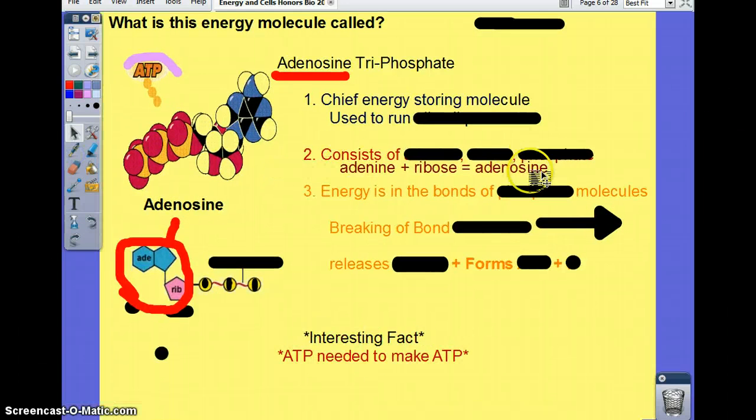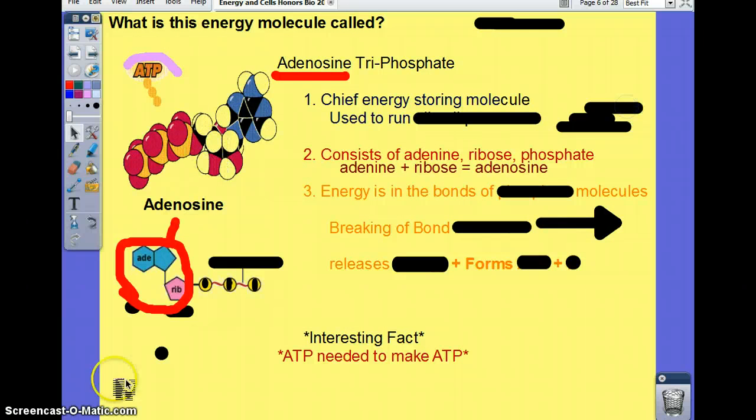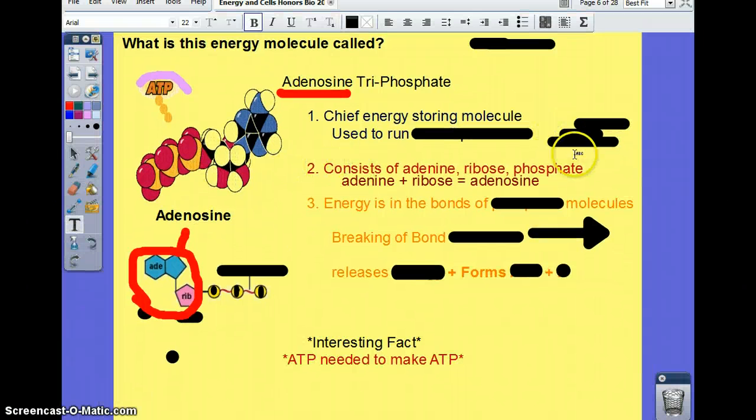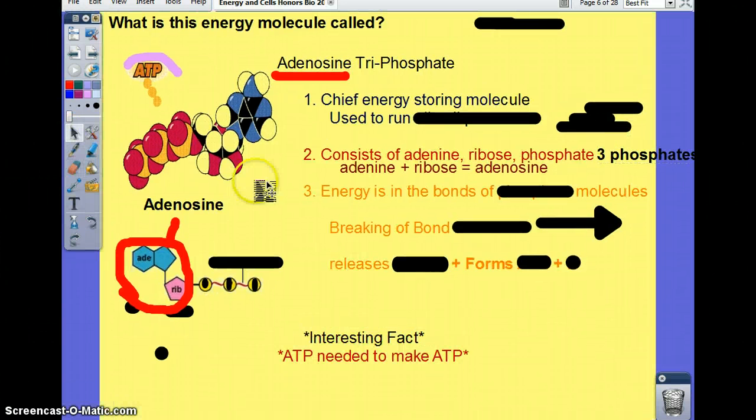And then you have the triphosphate, which is basically three phosphates. So triphosphate meaning three phosphates, as I put here. That's important because those phosphates cause the release of energy.